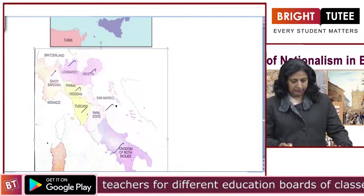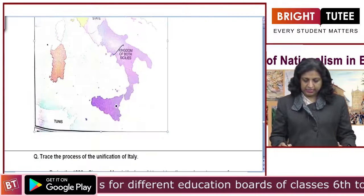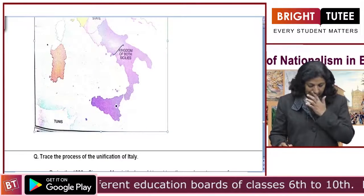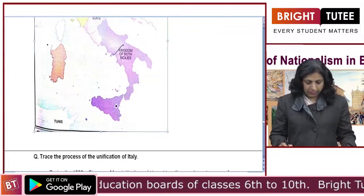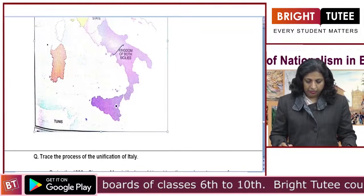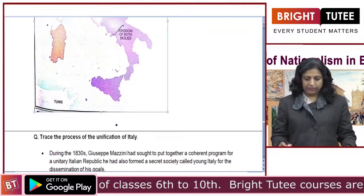You can see there are seven states. Now, how this unification of Italy was — this process was finally completed.